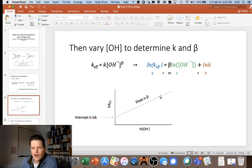If you look at your rise over run—the change in ln(k_eff) over the change in ln[OH⁻]—you'll get your slope, and that will be beta. You'll figure out whether beta is 1 or 2.